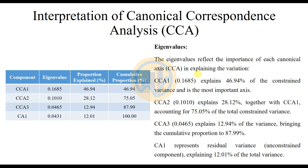CCA1 has an eigenvalue of 0.1685, explaining 46.94% of constrained variation and is the most important axis. CCA2 has an eigenvalue of 0.1010, explaining 28.12%; together with CCA1, they account for 75.05% of total constrained variation. CCA3 has an eigenvalue of 0.0465, explaining 12.94% of variation, bringing the cumulative proportion to 87.99%. The last component, CA1, represents residual unconstrained variation, explaining 12.01% of total variation.